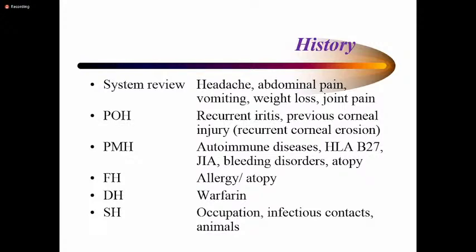Family history of allergy and atopy points toward allergic conjunctivitis. Drug history should include anticoagulants and other drugs that can cause bleeding. Social history and occupation matter — construction work and operational hazards involving chemicals or particles can injure the eye or cause constant irritation. Infectious contacts with microbes or animals are also relevant; cats and dogs can cause an allergic response, and animals can cause toxocariasis, which gives uveitis and presents with a red eye.